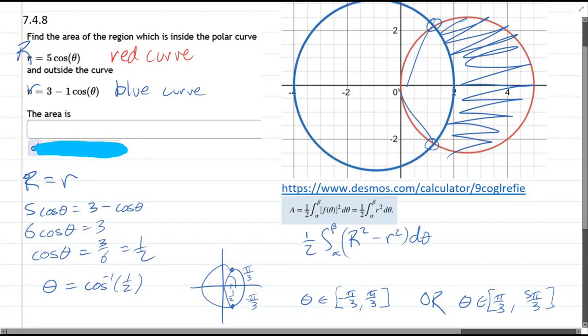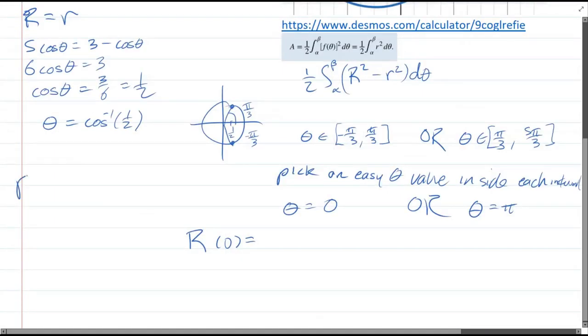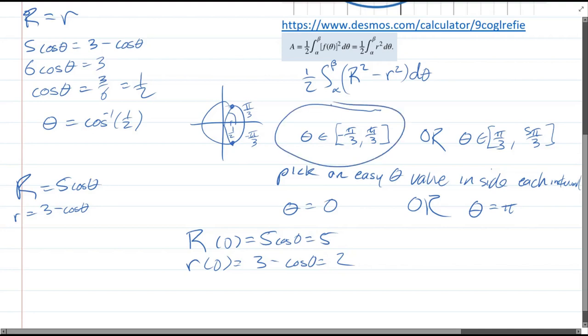Big R is 5 cos theta, little r is 3 minus cos theta. Big R of 0 is 5 cos 0, which is 5. Little r of 0 is 3 minus cos 0, which is 2. Big R is the big value, little r is the little value. This is the interval we need.